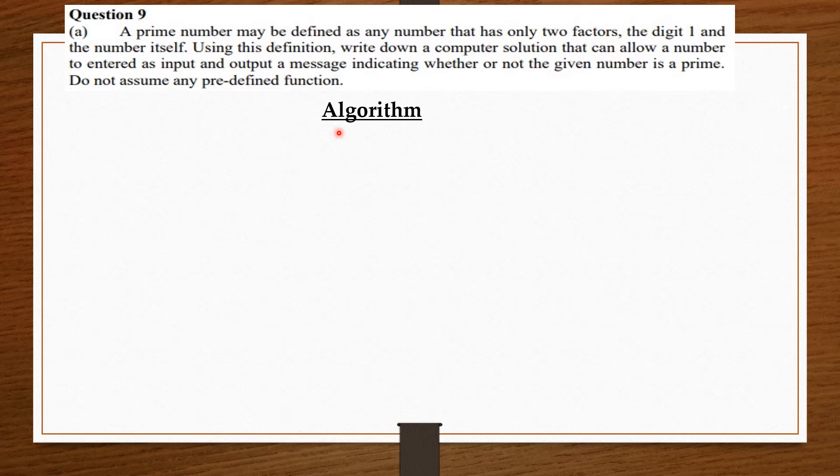For the algorithm, we are going to ask the user to input the particular number. Then we're going to create an empty variable called number of factors, so we set numOfFactors equals zero. This number of factors is going to count the number of factors of the number the user is going to enter.